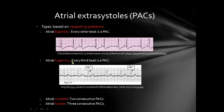Atrial trigeminy is where every third beat is a premature atrial contraction: normal beat, normal beat, extrasystole, repeating. Atrial couplets means two consecutive premature atrial contractions: so normal beat, two extrasystoles, normal beat, two extrasystoles — this is atrial couplets.